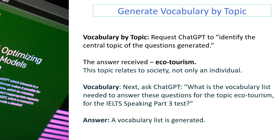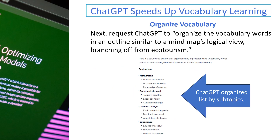How does ChatGPT speed up vocabulary learning? By identifying vocabulary related to the topic of the questions. Ask ChatGPT to identify the central topic of the generated questions — the answer received was 'Ecotourism.' This topic relates to society, not only an individual. To identify vocabulary for the topic, ask ChatGPT: 'What is the vocabulary list needed to answer these questions for the topic Ecotourism for the IELTS Speaking Part 3 test?' A vocabulary list is then generated. Next, request ChatGPT to organize the vocabulary words in an outline similar to a mind map's logical view, branching off from Ecotourism.